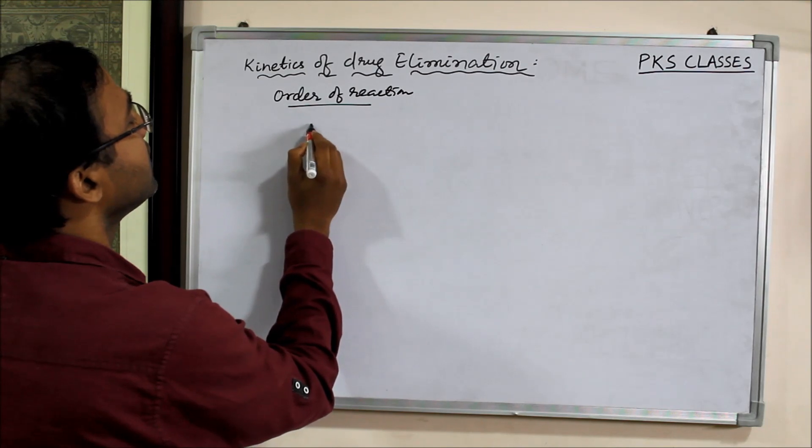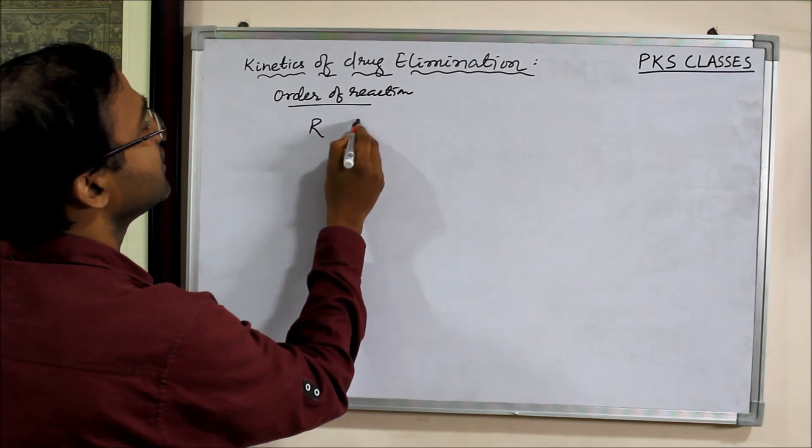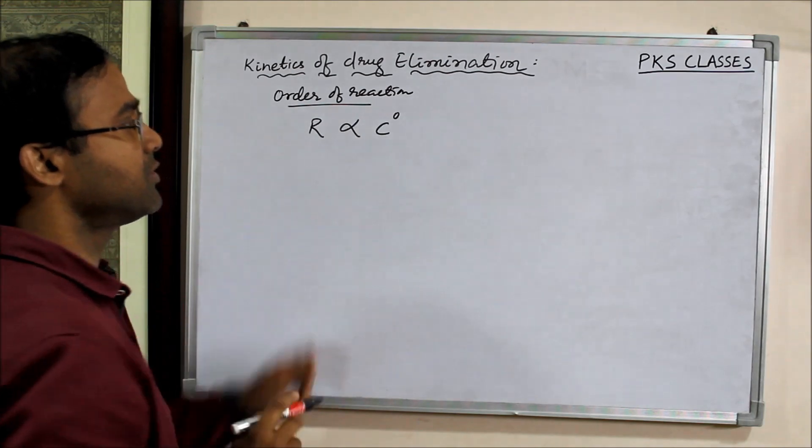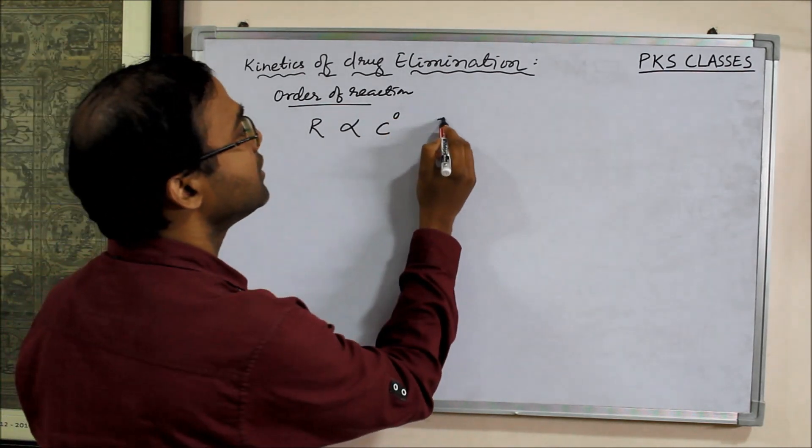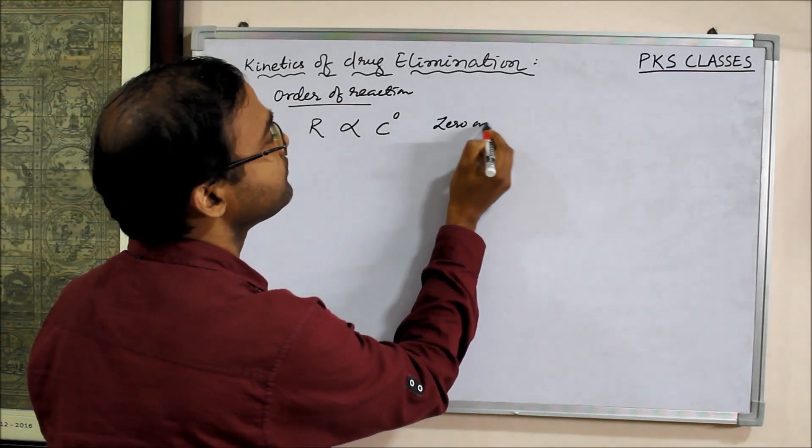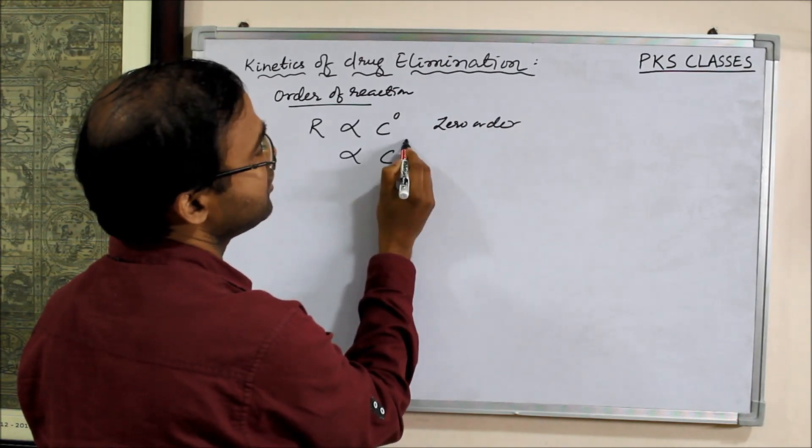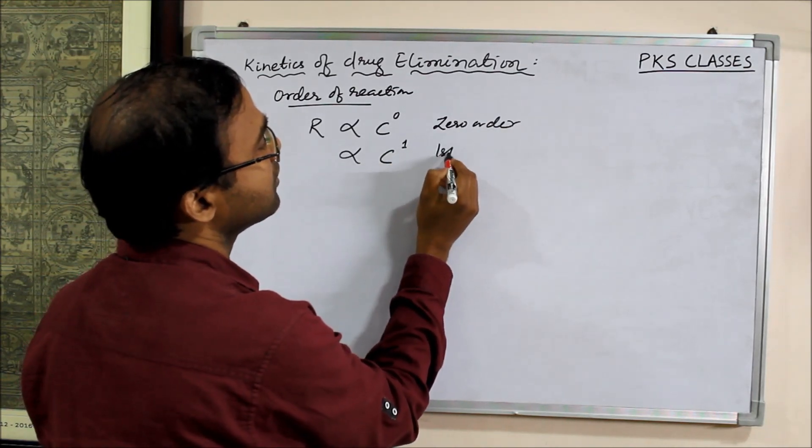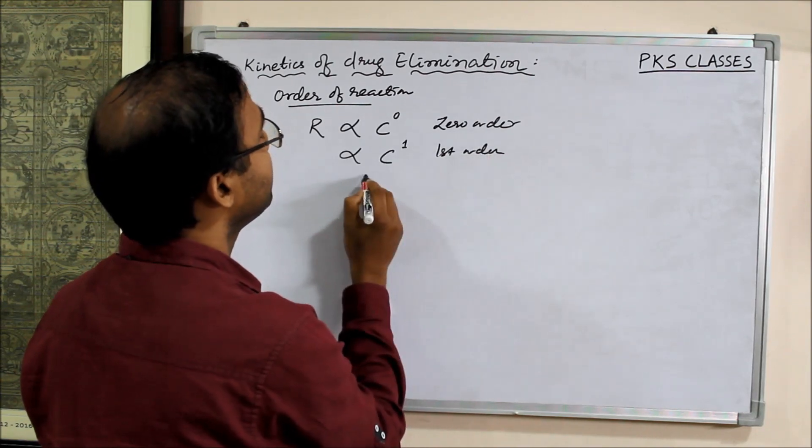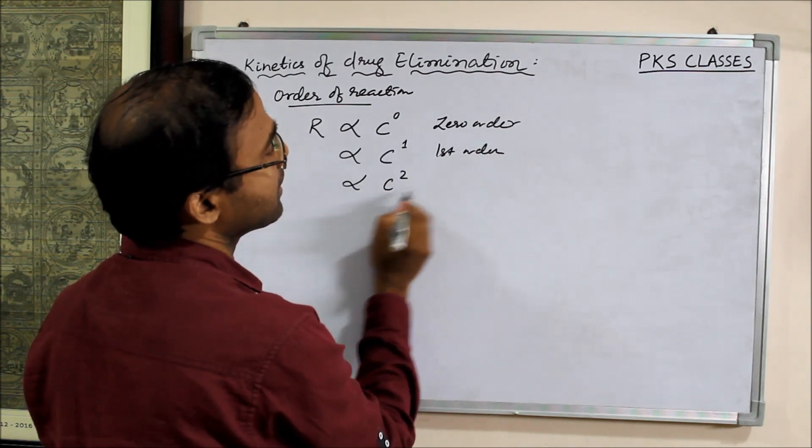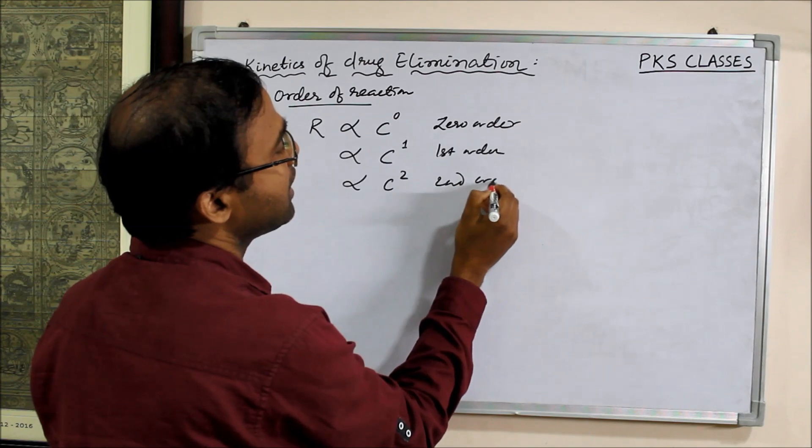If the rate of reaction is independent of concentration, that means C to the power 0, then it is called zero order. If it is directly proportional to concentration, C to the power 1, it is called first order. If it is proportional to C squared, it is second order and so on.